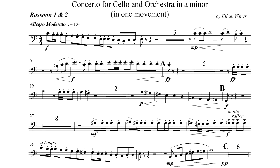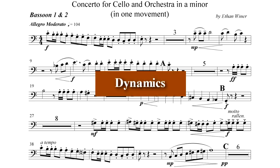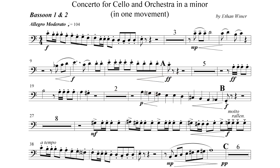The last aspect of melodies and harmonies we'll consider is how loudly they are played and how their loudness varies over time. The general term for this is dynamics, and it's a very important property of music that makes all the difference between a soothing lullaby and a bombastic fanfare. This bassoon part from my cello concerto in A minor shows several dynamic markings. The first is forte, abbreviated as an italic F, which tells the musician to play fairly loudly — forte means strong in Italian.